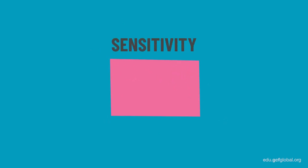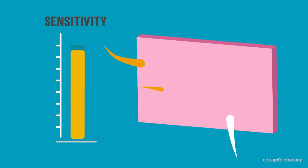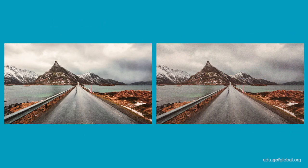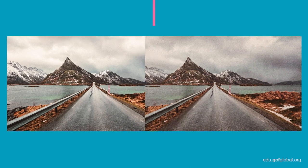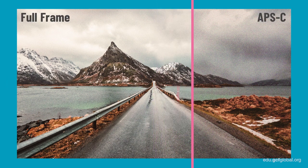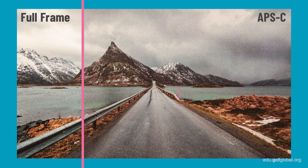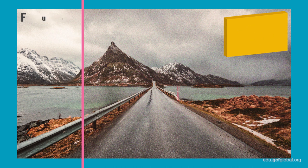Finally, another thing to keep in mind is the camera sensor's sensitivity. The larger the sensor, the higher the sensitivity, since it will be able to receive more light. These two photos were taken with the same ISO sensitivity, in the same conditions, and with the same settings. Clearly, you can see how the full-frame camera generates less static or noise, compared to the photo taken with a camera featuring a smaller sensor.